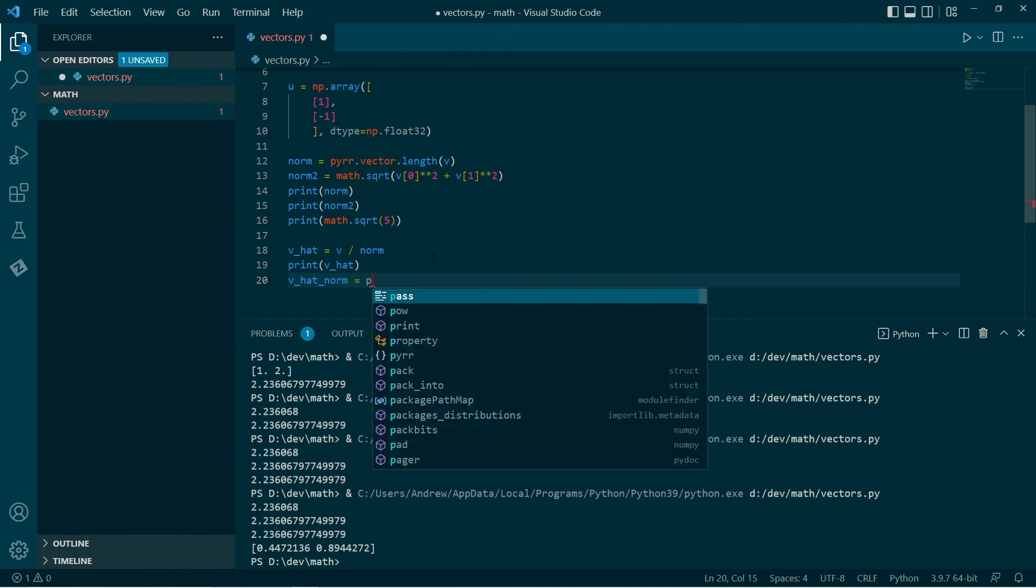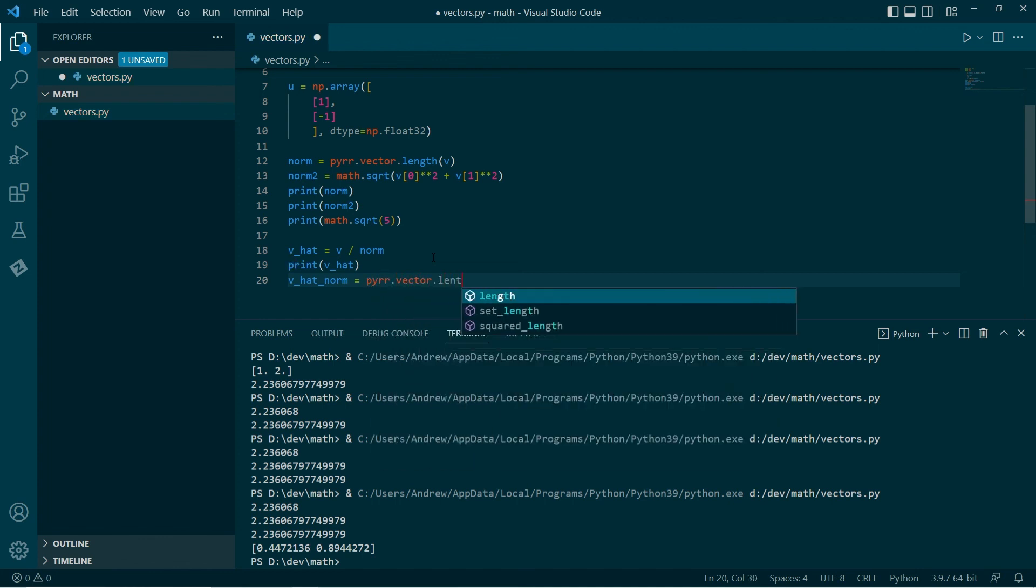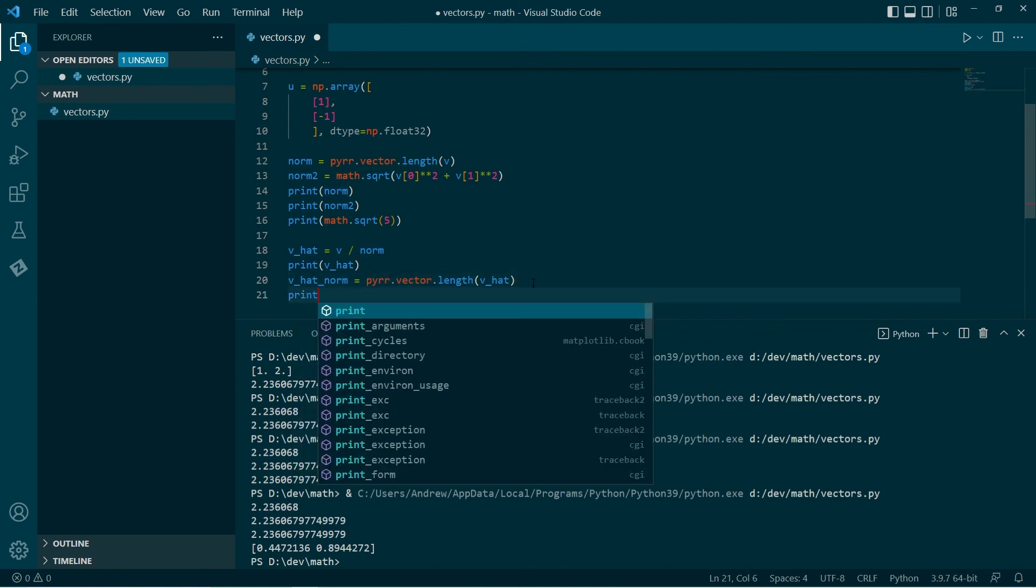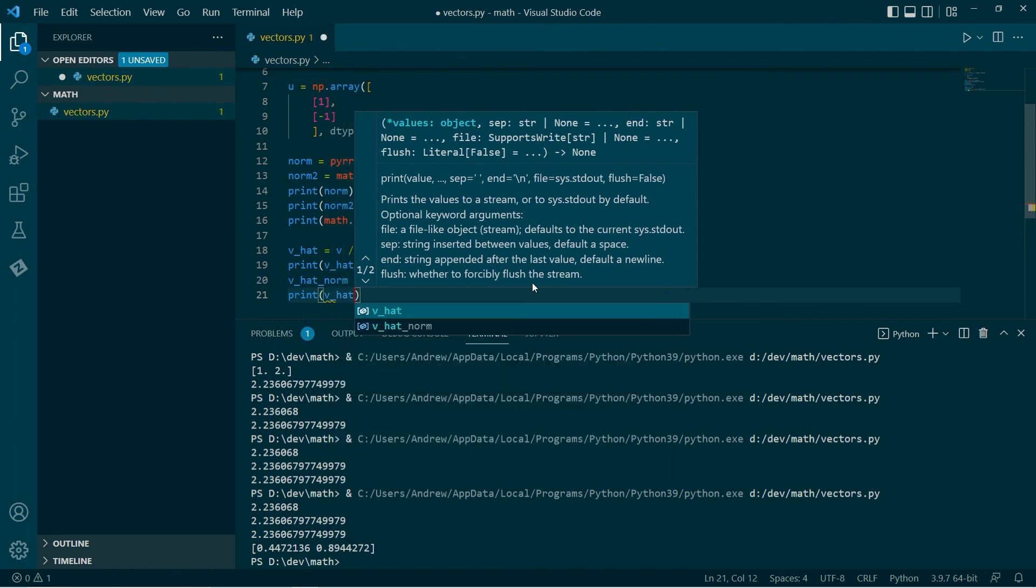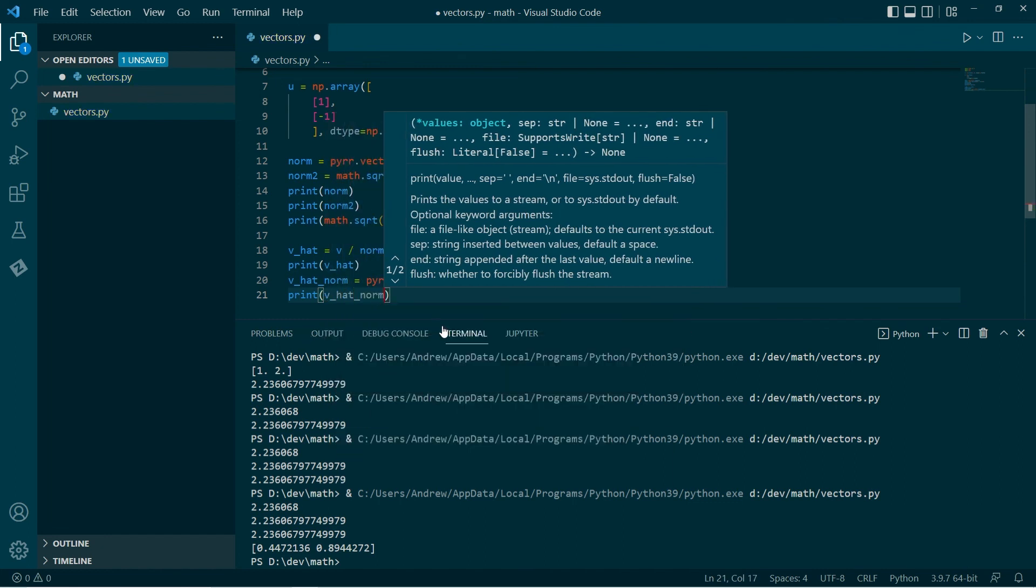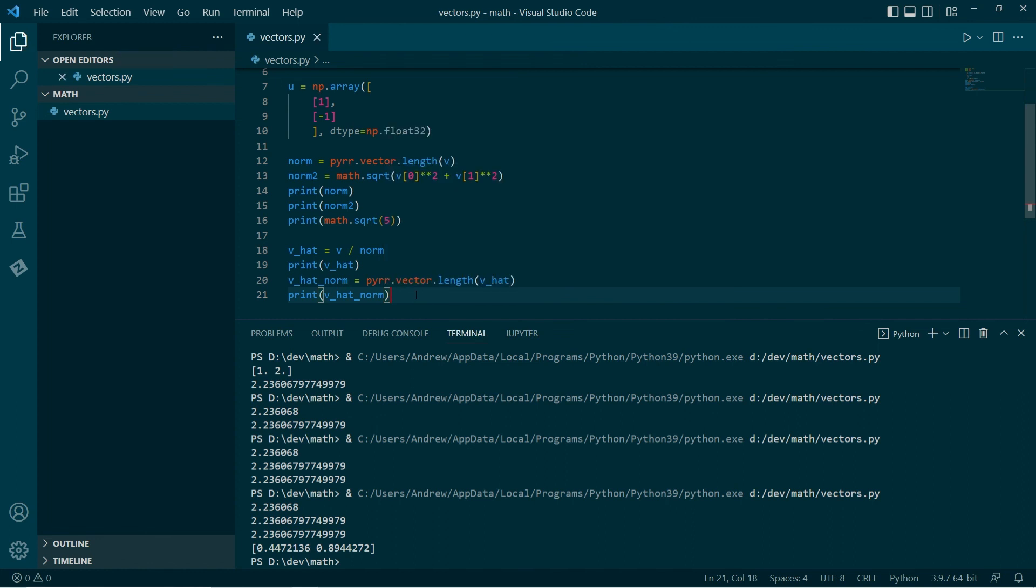So we'll go, we'll print that out. So we expect this to be a length of 1, possibly just very close to 1 because floating points are not exact.